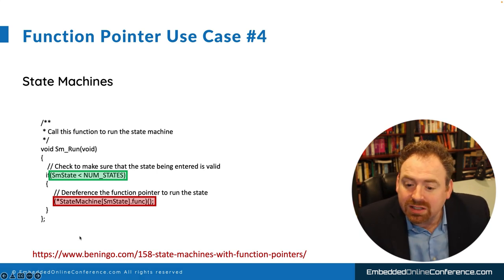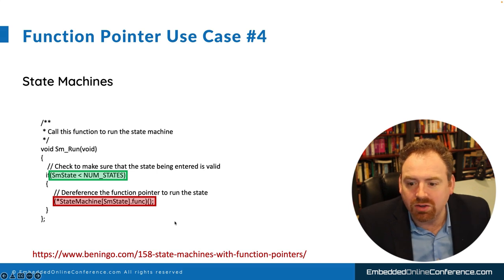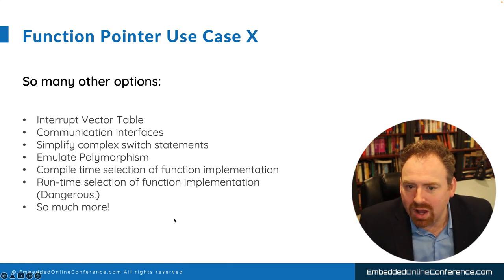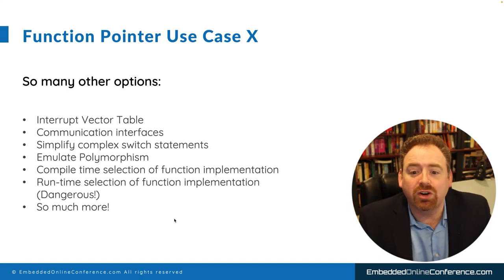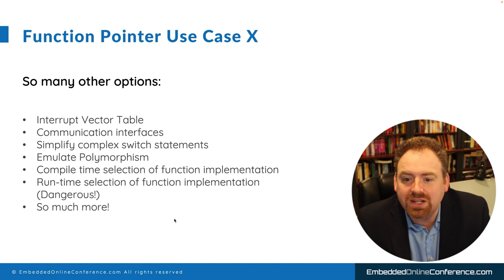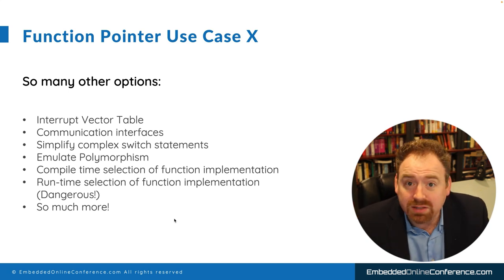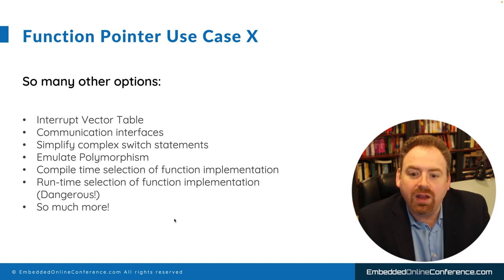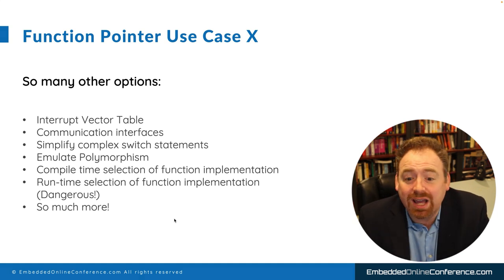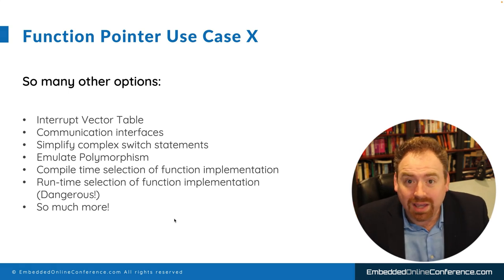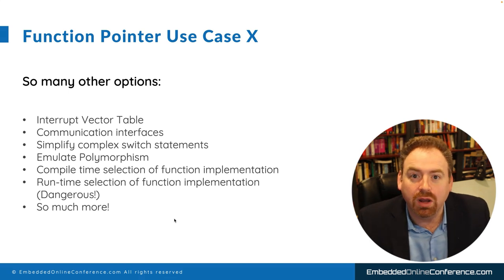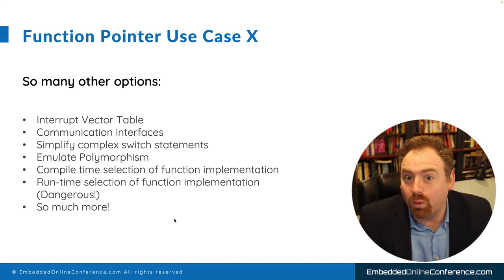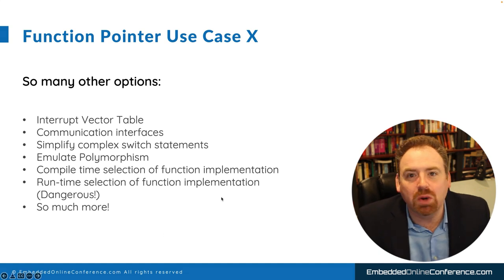We don't have time to go over every single detail in a micro talk, but some older blogs cover this as well. This is just a couple of the use cases — there are so many more things we can use function pointers for: interrupt vector tables, communication interfaces, simplifying switch statements, and even emulating some type of polymorphism within C code. We can do compile-time selection of functions during implementation, or also during runtime — although that starts to get dangerous in case you have bit flips or memory corruption that can affect what code actually gets executed when you dereference a function pointer.